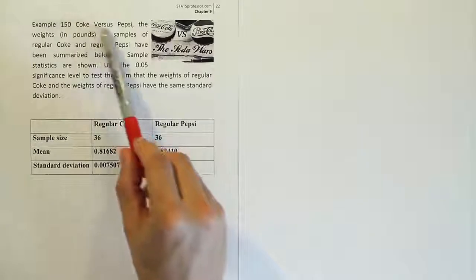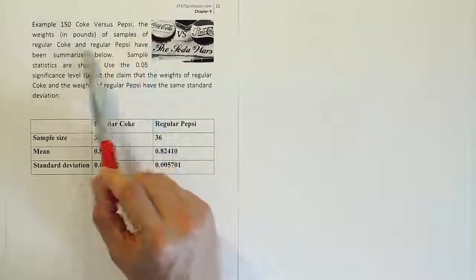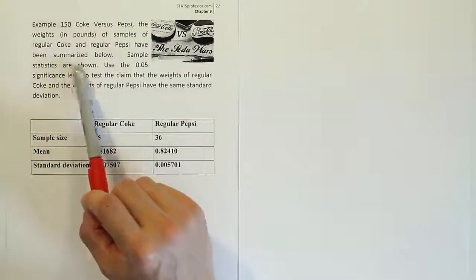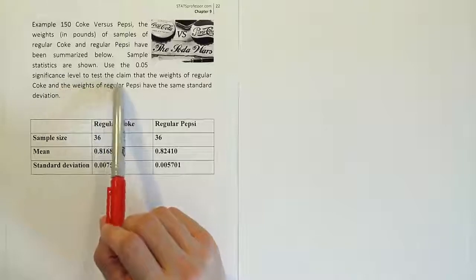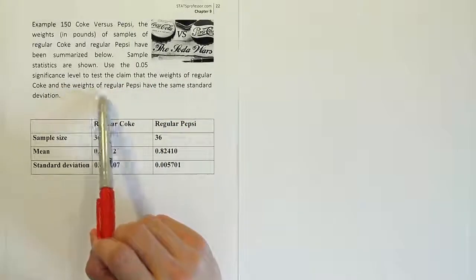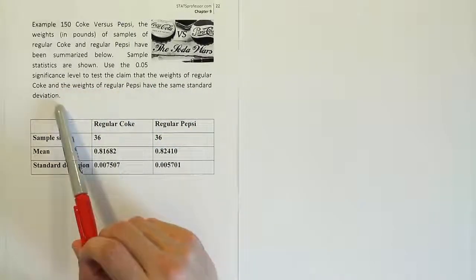Example 150. Coke vs. Pepsi. The weights in pounds of samples of regular Coke and regular Pepsi have been summarized below. Sample statistics are shown. Use the 5% significance level to test the claim that the weights of regular Coke and the weights of regular Pepsi have the same standard deviation.